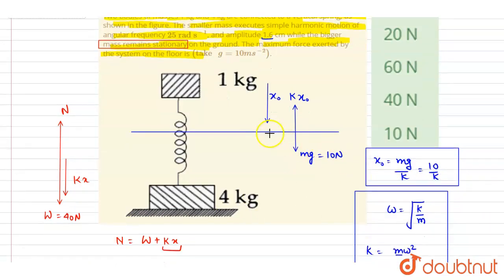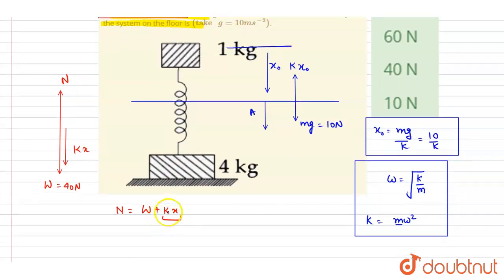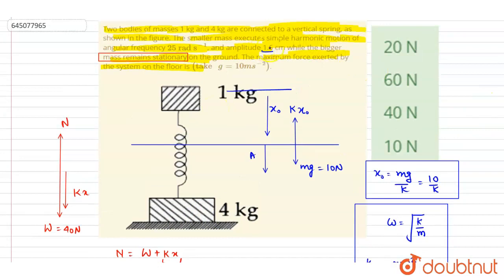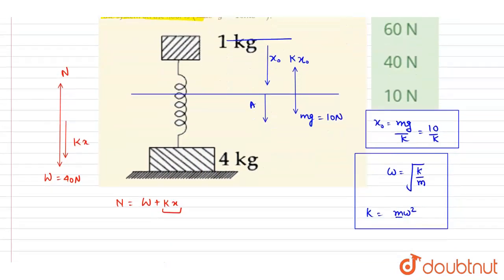From here it will further get compressed by a length A maximum. And when the compression in the spring will be maximum, the normal reaction by the floor on the floor will be maximum. I mean that normal reaction on the block and normal reaction on the ground both will be maximum when the compression in the spring will be maximum. So this amplitude 1.6 centimeter is from the equilibrium position.